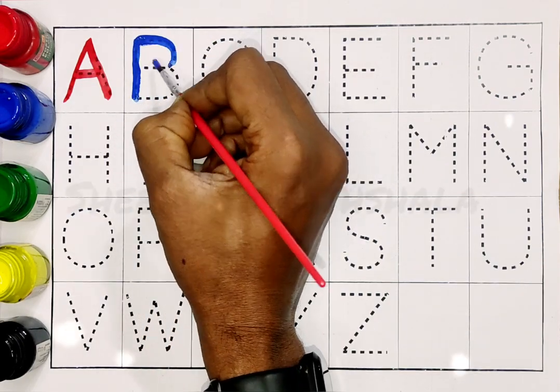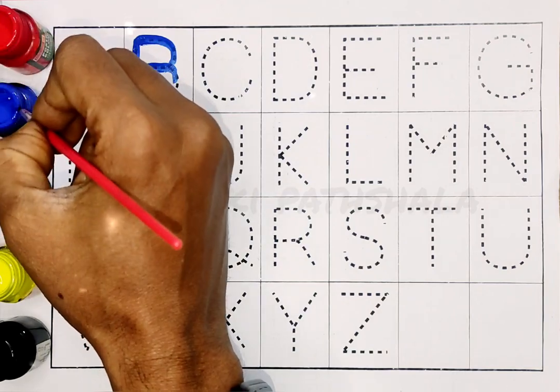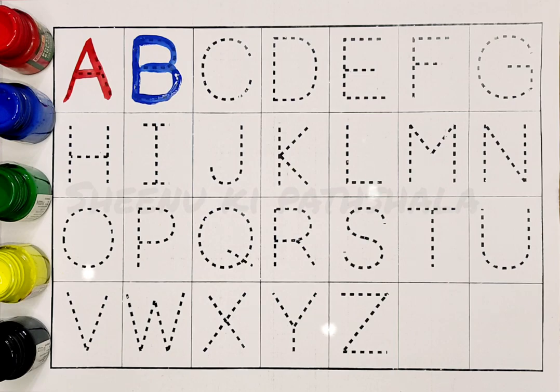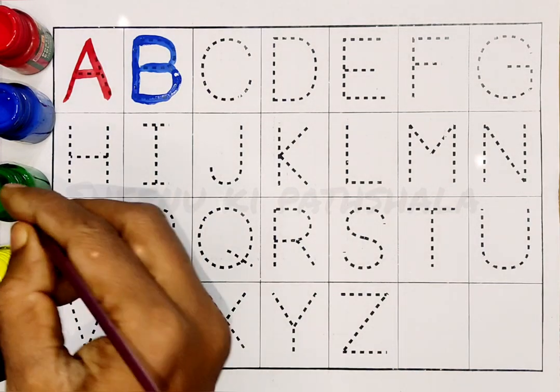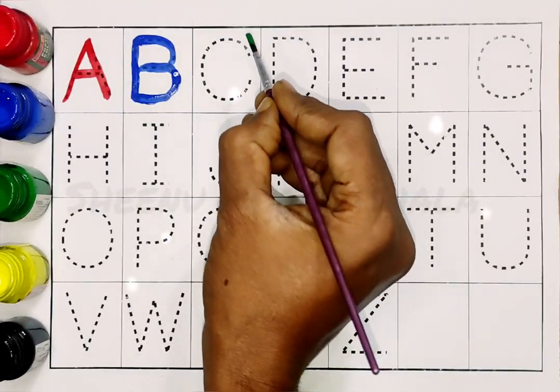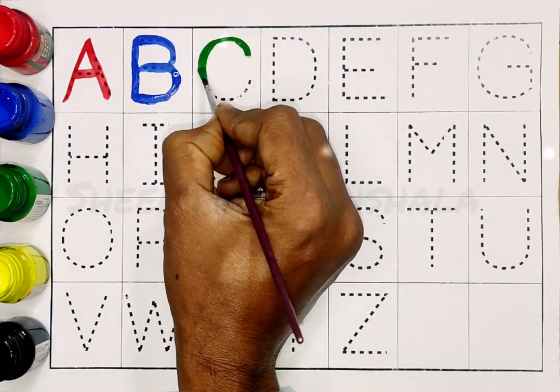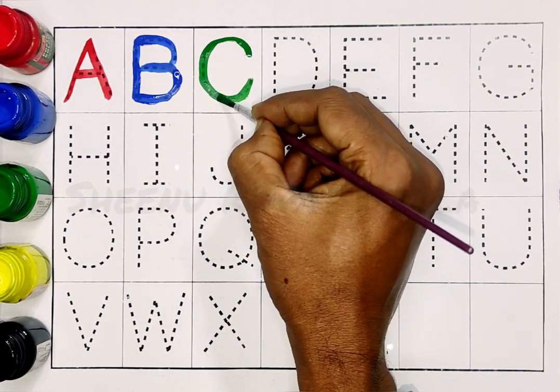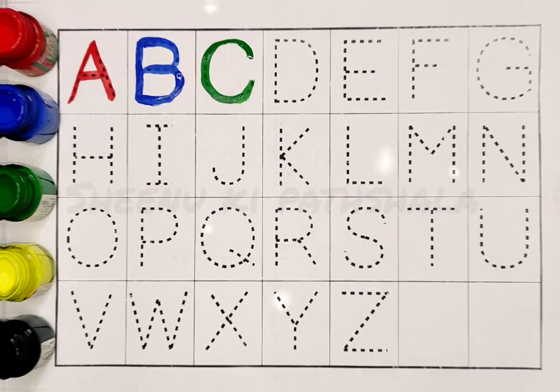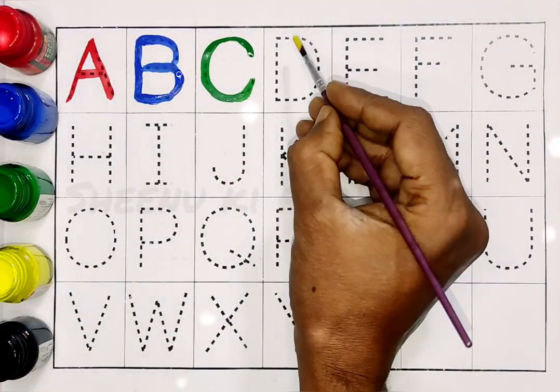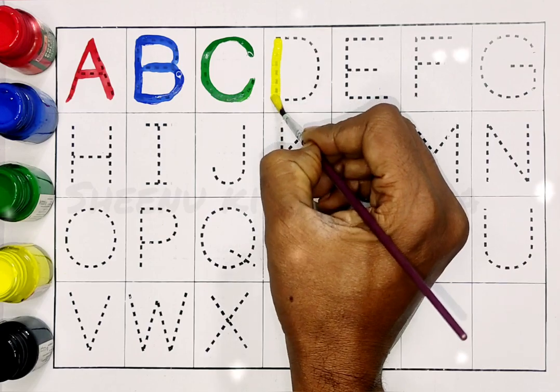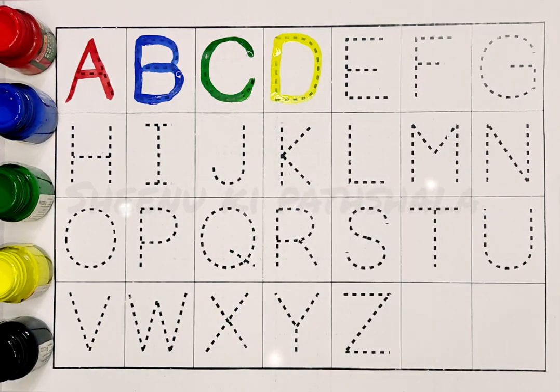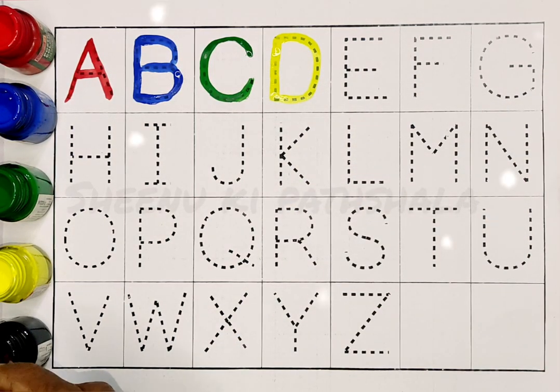B, B for ball. Green color. C, C for cat. Yellow color. D, D for dog. Black color.